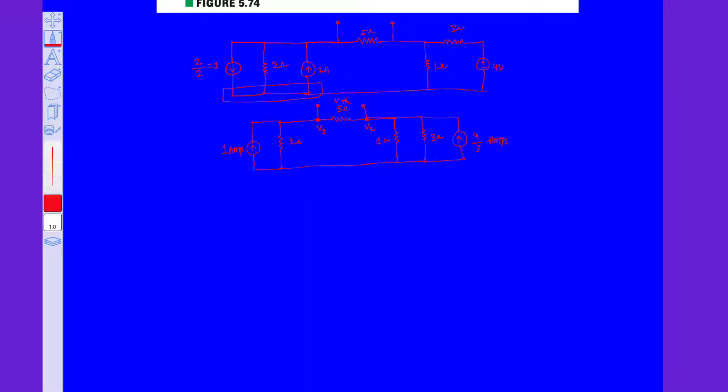Let us simply write the KCL equation at node V1. V1 minus V2 over 5 ohm plus V1 by 2 equals 1 ampere. By simplifying this: 2V1 minus 2V2 plus 5V1 equals 10, so 7V1 minus 2V2 equals 10. Let us say this is equation number 1.